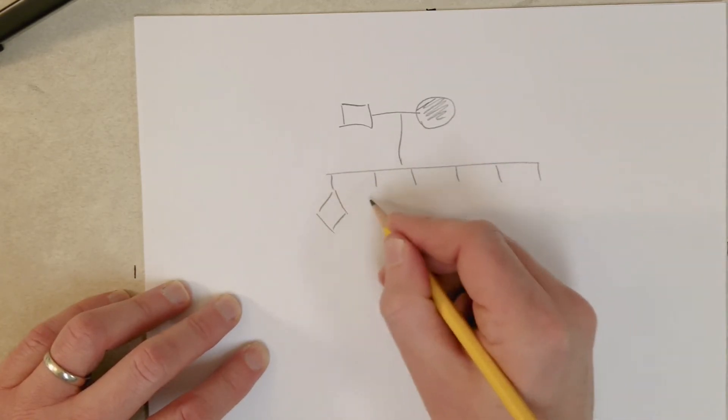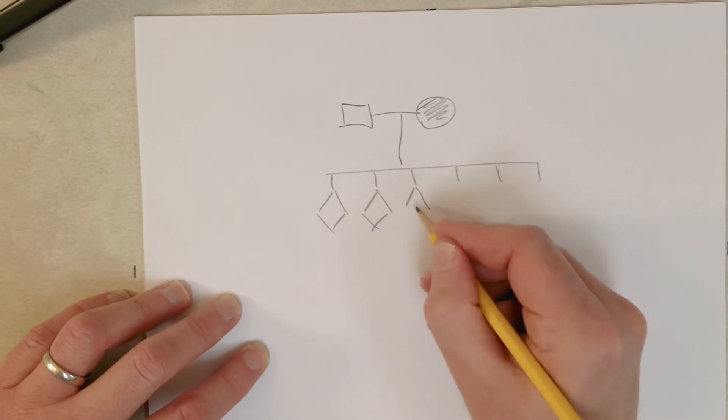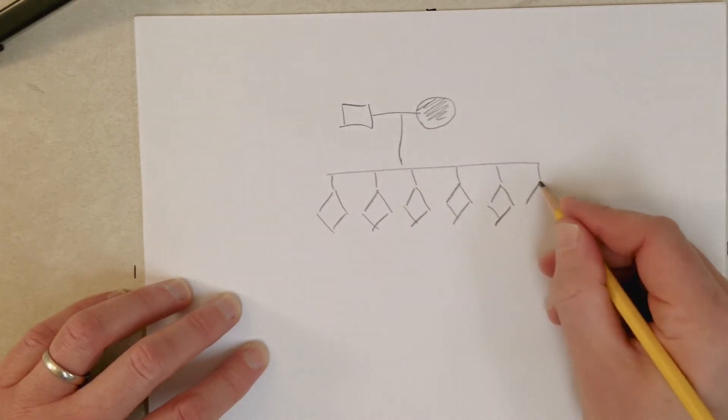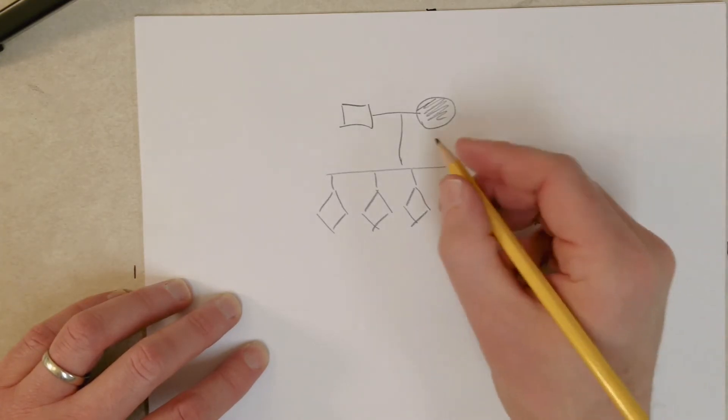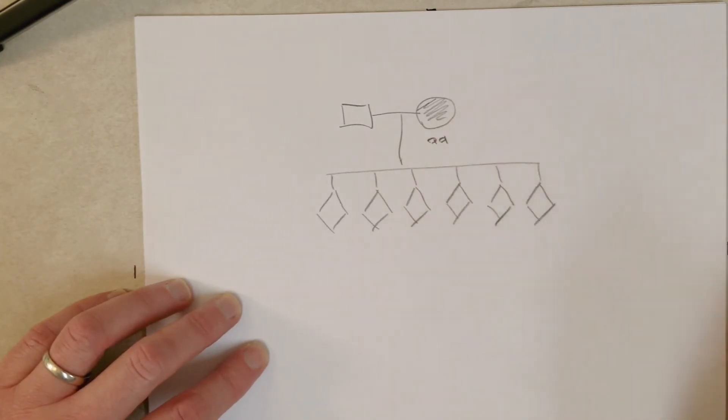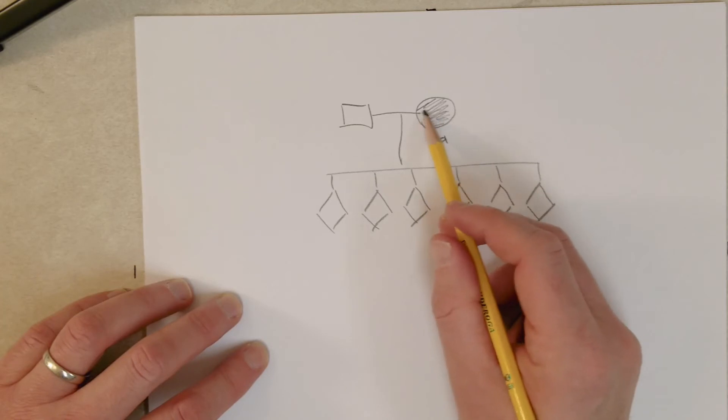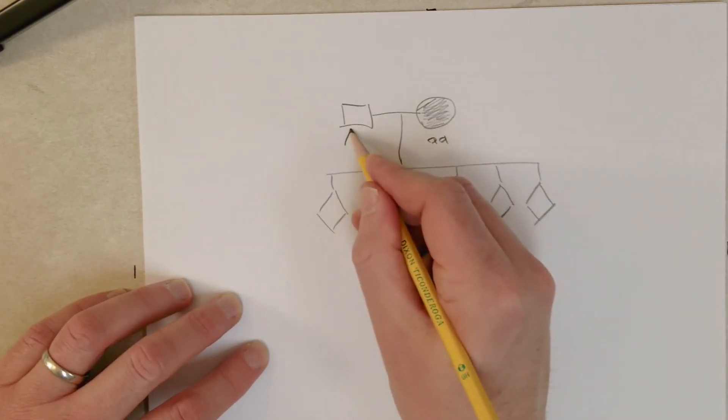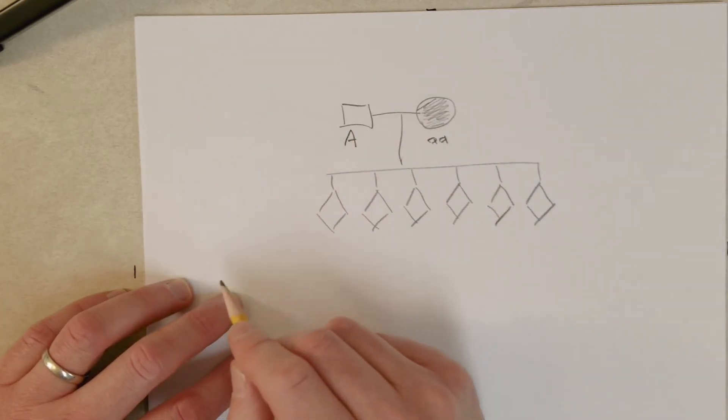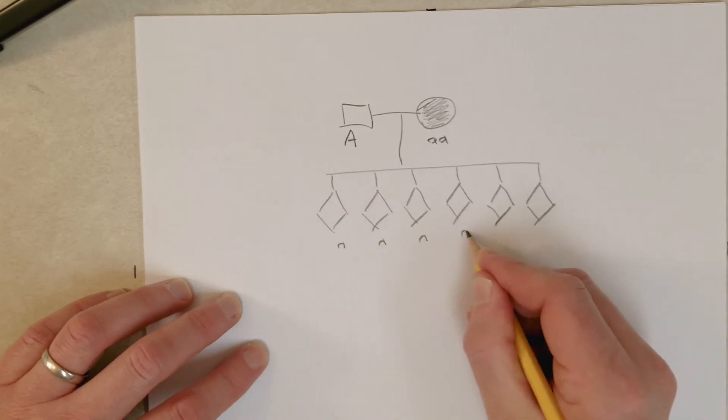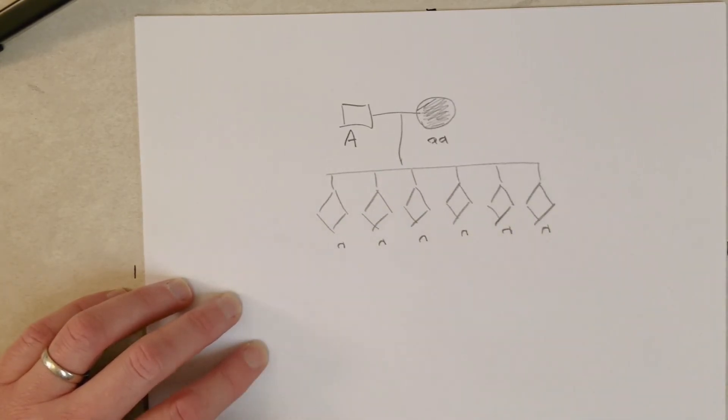All normal. Okay, so, and you know, this question came up in class today. So we can have two small a's here because the mom is albino. The dad has to have at least one big A here. All the kids have to get one little a from mom because she only has little a's to donate.